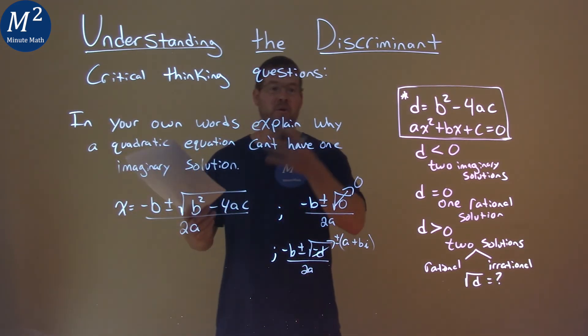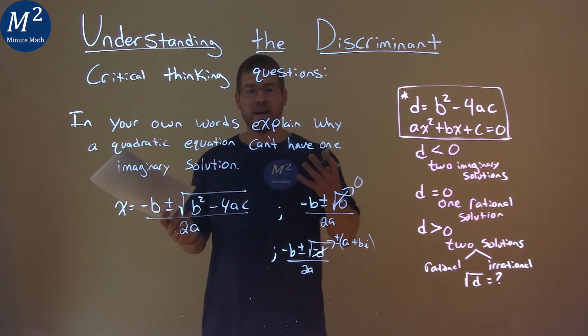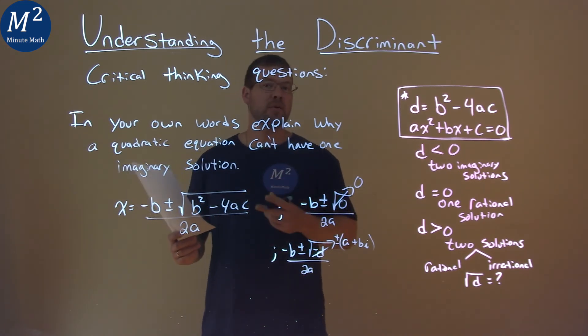And so that is why, in our own words, or my words, but hopefully you learned something, that our quadratic equation can't have one imaginary solution and must always have, if it's imaginary, two imaginary solutions.